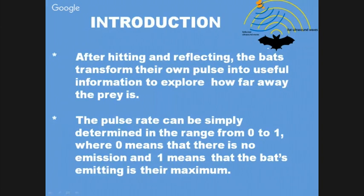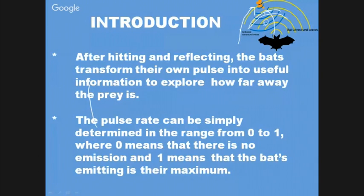Coming back to the technique, the algorithm considers two main features: pulse rate emission and the loudness parameter. Whenever the bat emits frequencies, these two parameters keep changing. When it is at the farthest distance from its target it will have maximum loudness, and as it approaches the target the loudness keeps decreasing. While the pulse rate emission increases as it reaches its target, the rate of pulse emission keeps increasing to a very high value. When it reaches a very large value, we know it has reached its target — the prey has been taken and it's a complete successful algorithm.